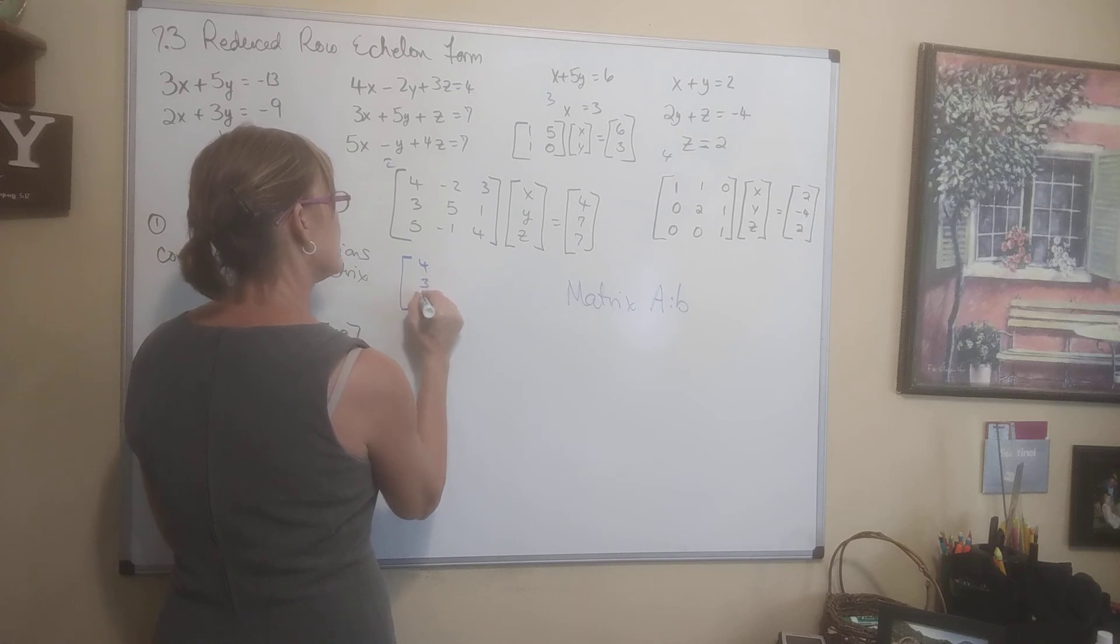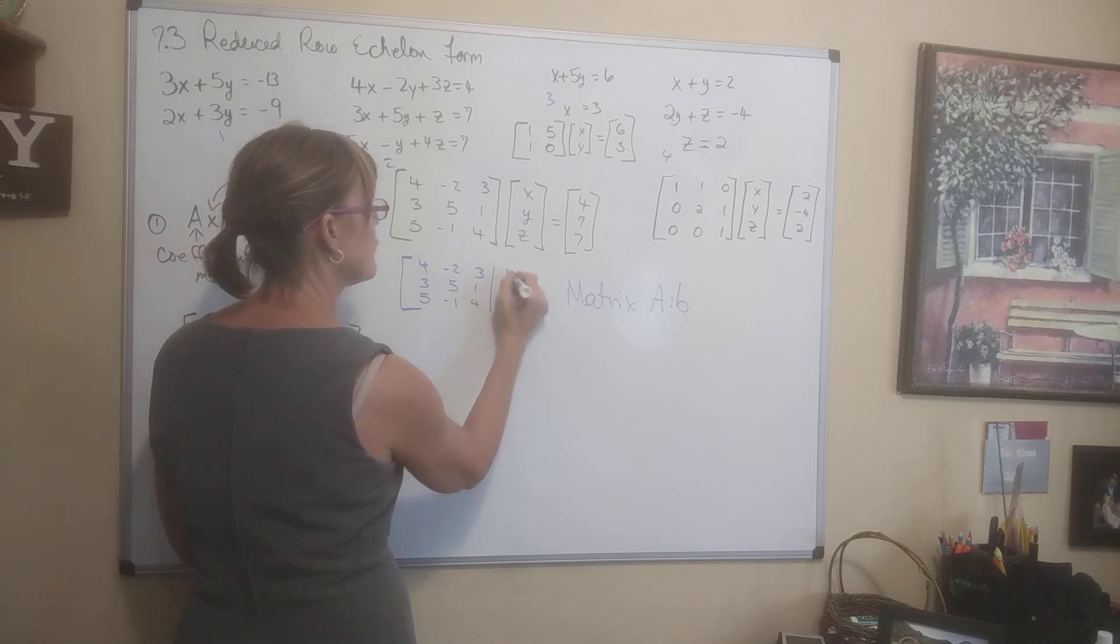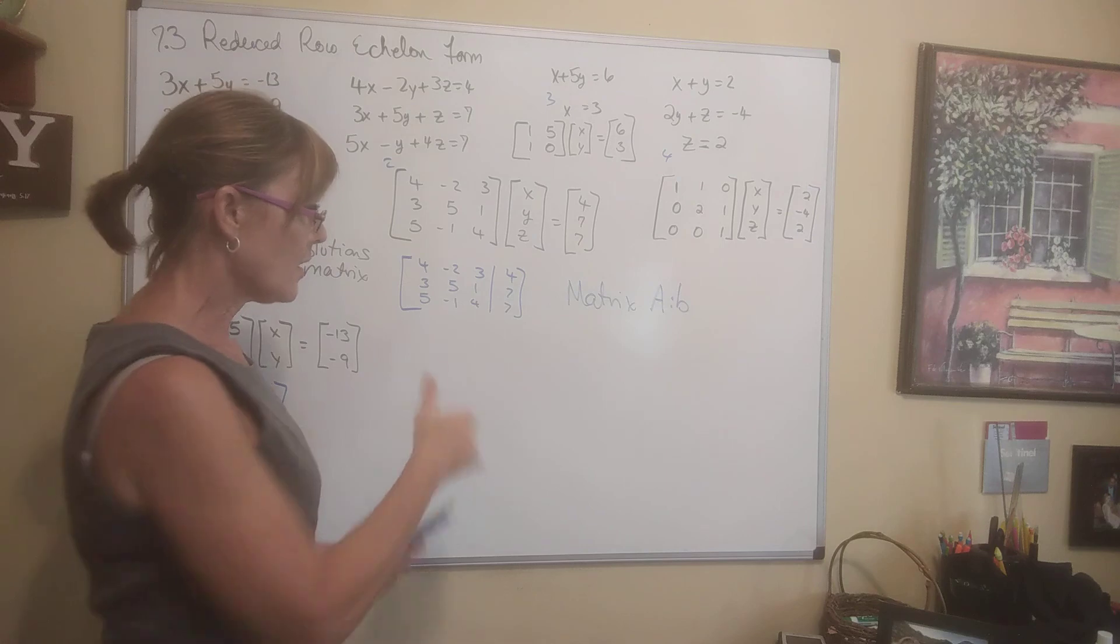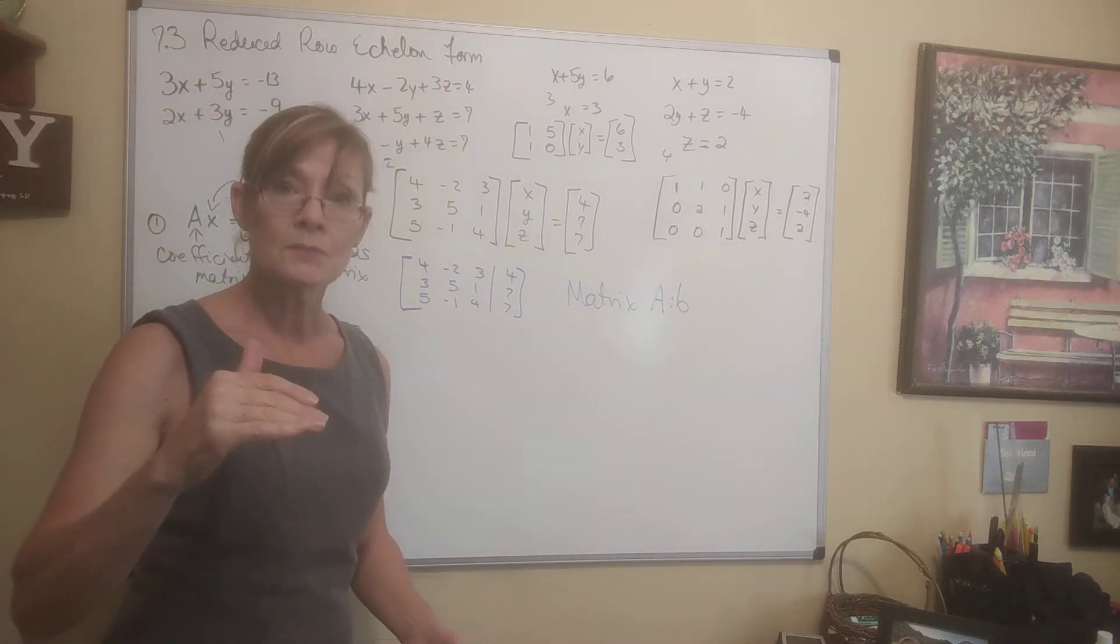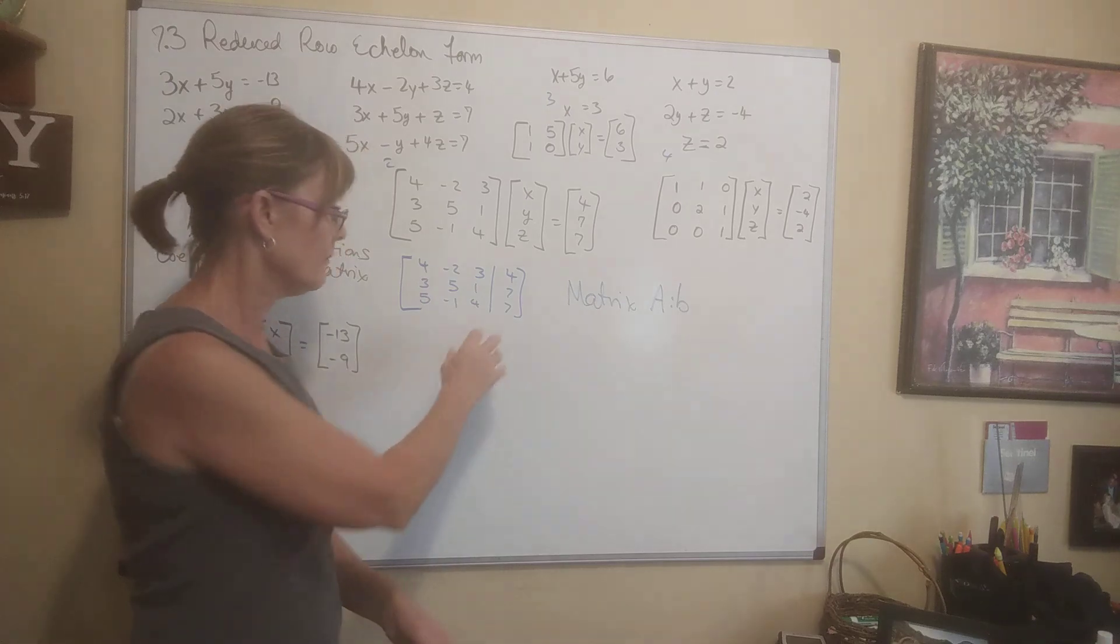Let's do the augmented matrix for this guy. 4, 3, 5, negative 2, 5, negative 1, 3, 1, 4, augmented with 4, 7, 7. So I realize it's not hard to write these numbers down. Here's what you're learning. The word augmented matrix means add on form this. That's what you need to connect right now.